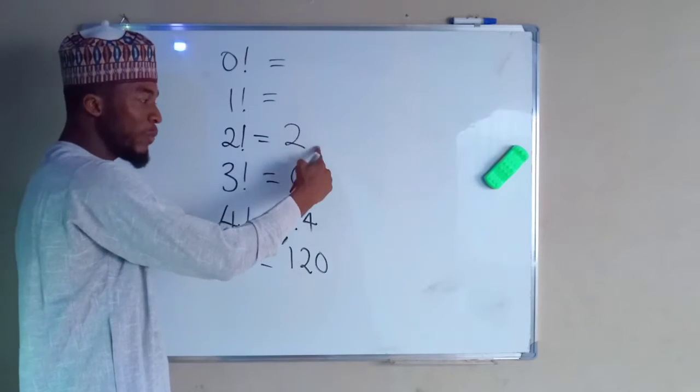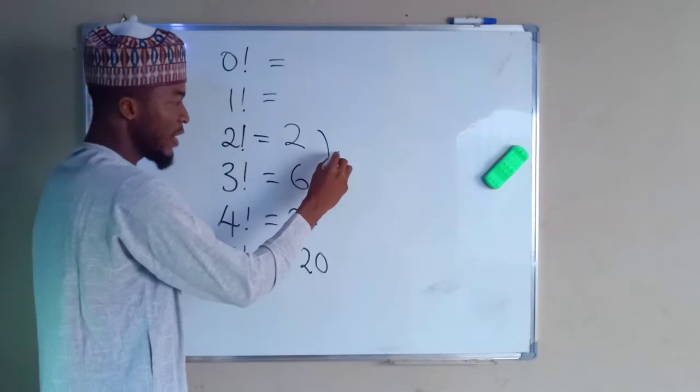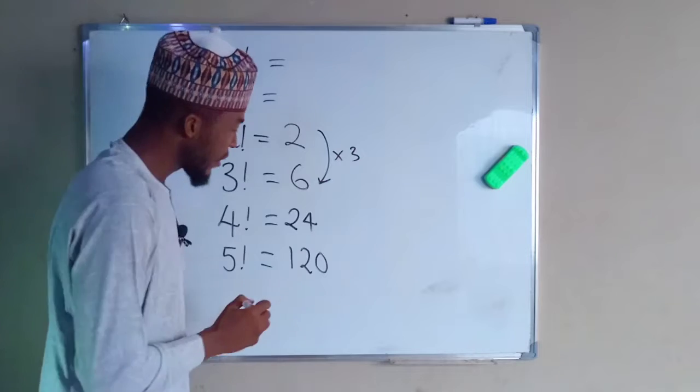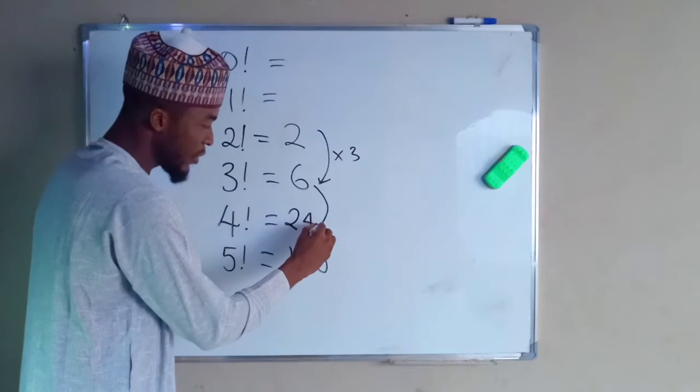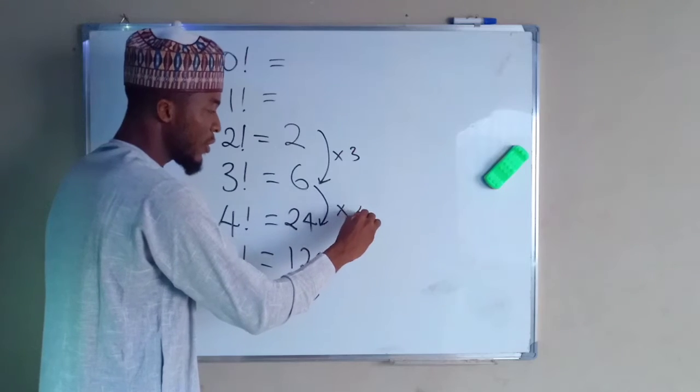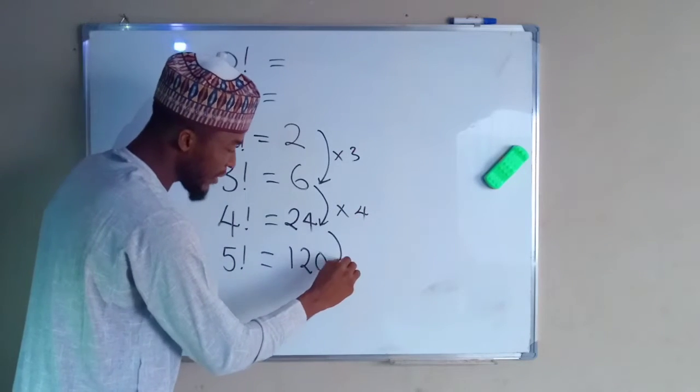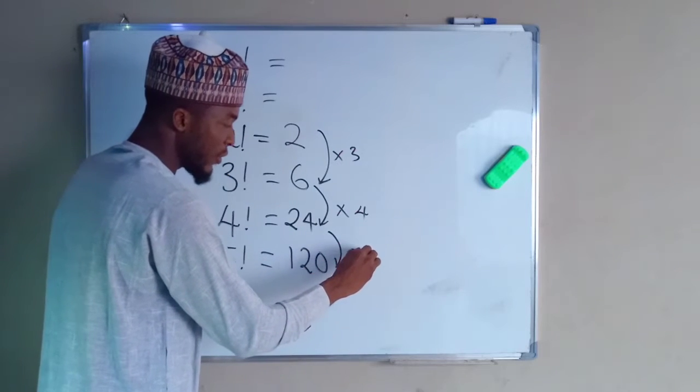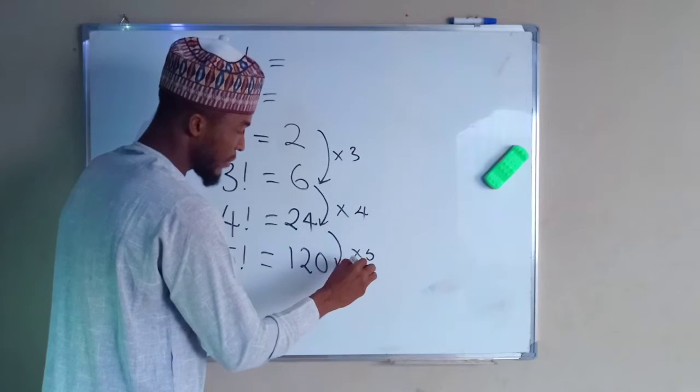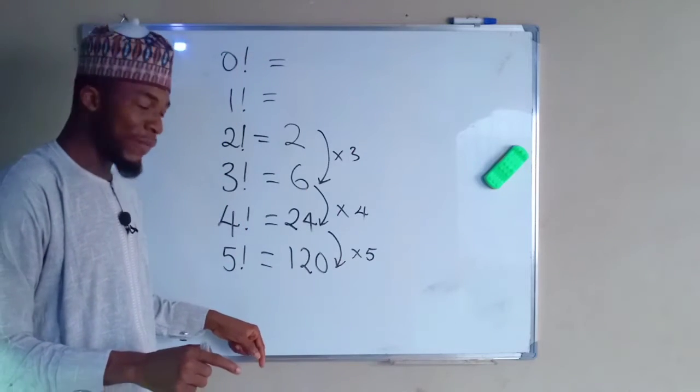If you multiply 2 by 3, you are going to obtain 6. So from here to get here, you have to times by 3. From 6 to 24, if you times 6 by 4, you are going to obtain 24. If you multiply this number 24 by 5, you are going to obtain 120. This is how the sequence will keep on going.